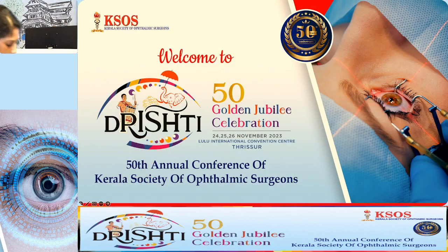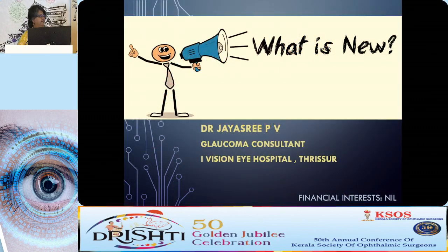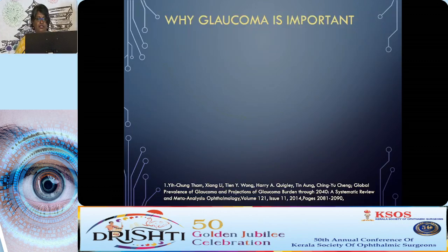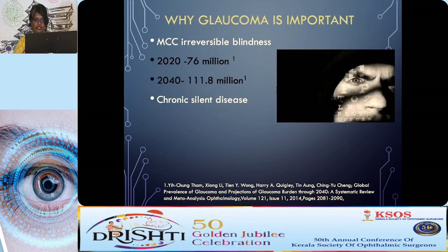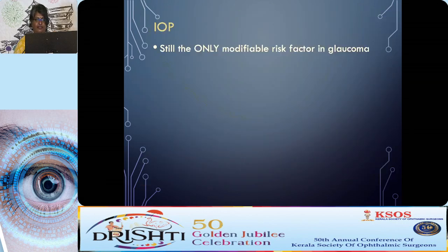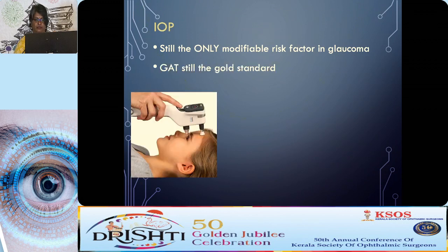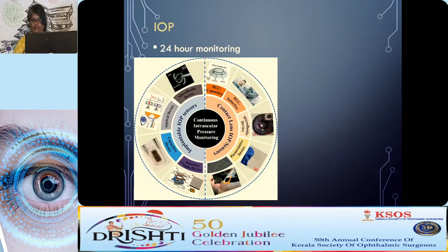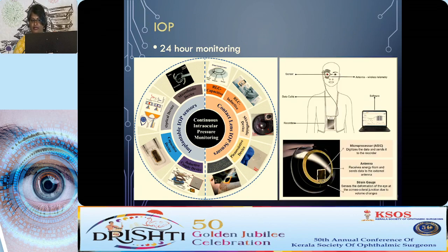Dr. Jayashree will present on what's new in glaucoma — with just 5 minutes. Good morning everyone. Thank you KSOS for the opportunity; I have no financial interest. IOP is the only modifiable risk factor in glaucoma. Newer eye care systems allow measurement of IOP even in the supine position. Home IOP monitoring allows patients to record IOP at home via an application and send readings to their doctor for follow-up. 24-hour monitoring is now possible using a contact lens that detects IOP continuously and records it. Implantable IOP measurement can also be integrated into the IOL.